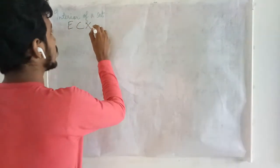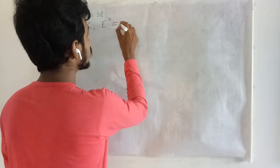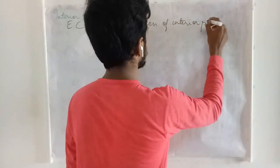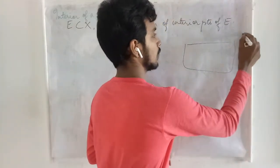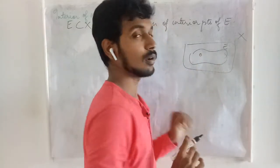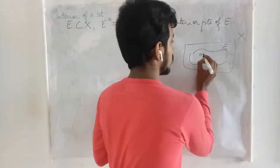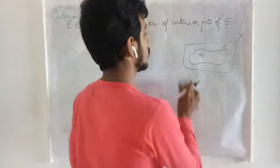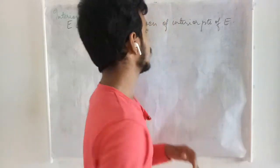Let us take a subset of a metric space X. The interior of the set E is denoted by E interior or E⁰. This is called the collection of interior points of E. Let us recall what we mean by an interior point. A point P is said to be an interior point of E if there exists at least one neighborhood of P which is completely contained in E. A set may have any number of interior points, and the collection of all those interior points is called the interior of a set E.